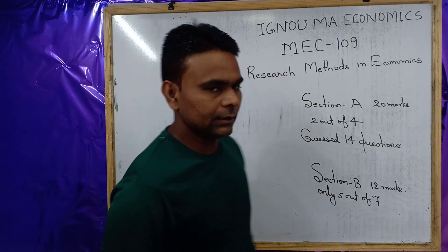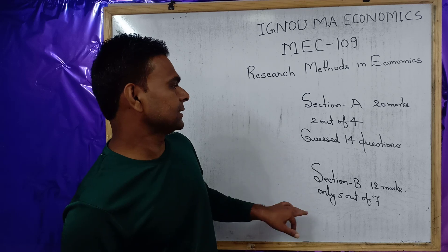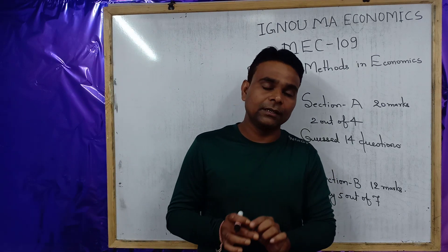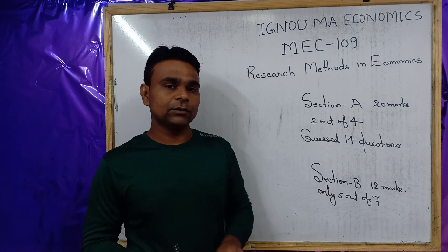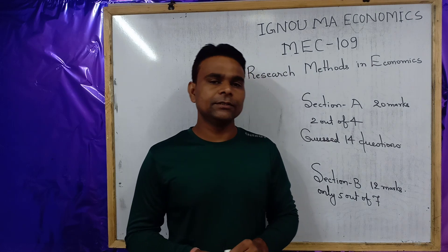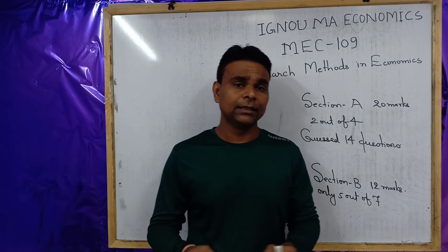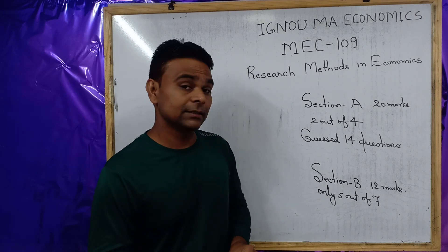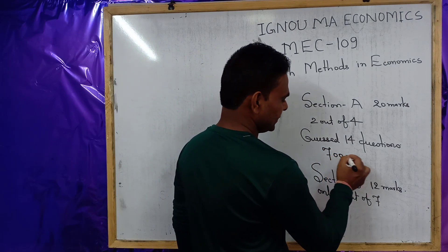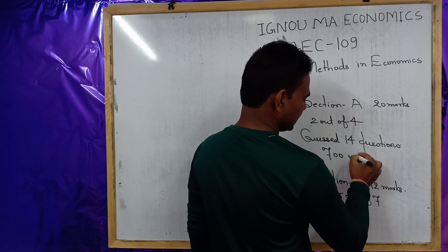Regarding the word limit instructed for Section A and Section B: you need to write around seven hundred words for each question in Section A, whereas you need to write around four hundred words for each question in Section B.